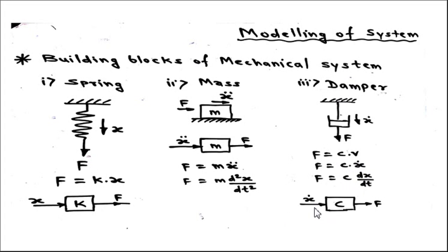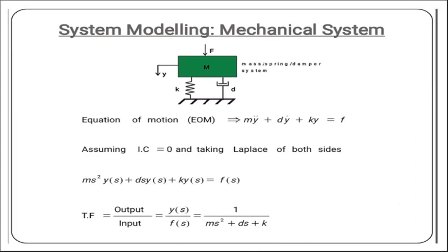Considering all three components together — mass, stiffness k, and damper — with external force applied and displacement y as output, the equation of motion is derived. The internal resistances are: inertia force (m·ÿ), spring force (k·y), and damping force (d·ẏ). Therefore the equation of motion is: m·ÿ + d·ẏ + k·y = F, where F is the external force. This is the equation of motion for this simple mechanical system.